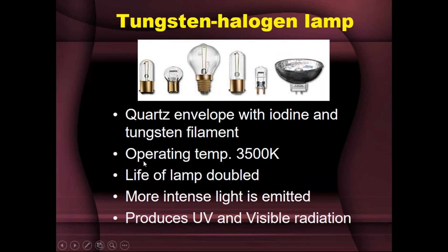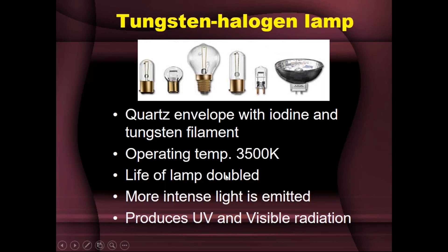Operating at 3,500 Kelvin gives useful UV and visible radiation. The intensity of light emitted is much greater, and since it produces UV and visible radiation it is a very useful lamp — particularly in fluorometric instruments, where both UV and visible incident light are required because different samples can be excited by different regions of radiation. This tungsten halogen lamp is a continuum source used in both UV and visible regions.